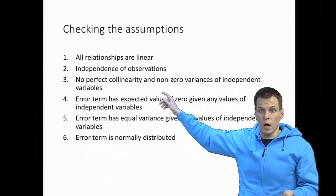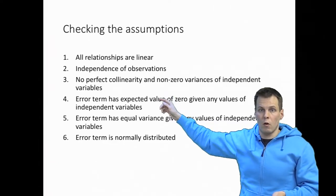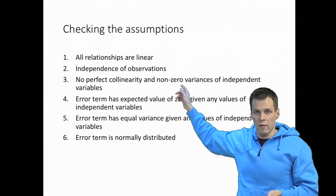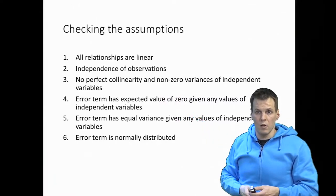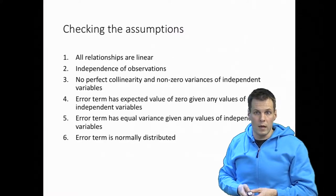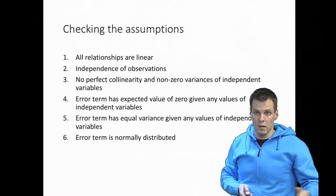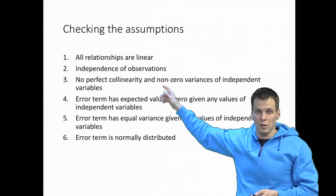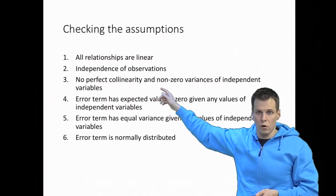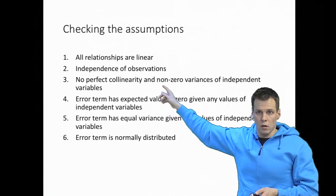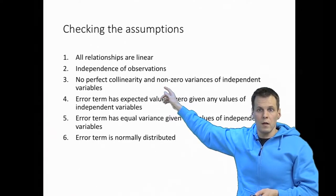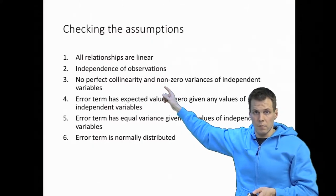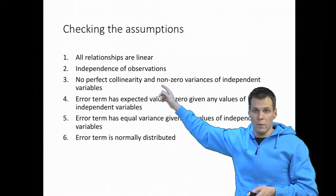Because once you know two dummies, you know the third value. Also, non-zero variance: if you are studying the effects of gender and you have no women in the sample, then you have no variance in gender. We know that this is not a problem in our data because if it was a problem, we couldn't even estimate the regression model. Because we got regression estimates, that indicates we don't have a problem with the third assumption.